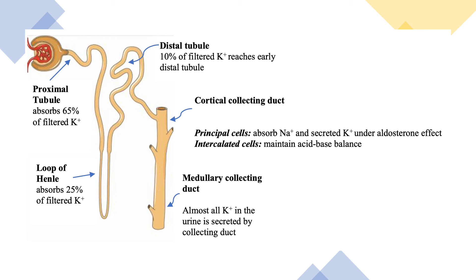In the cortical collecting duct and in the thick ascending limb of Henle, we have two types of cells: principal cells and intercalated cells. The principal cells absorb sodium and excrete potassium under the effect of aldosterone. As I said, aldosterone is the most important factor in potassium excretion. The intercalated cells have two types — alpha and beta — they are a mirror image of each other, and they maintain acid-base balance.